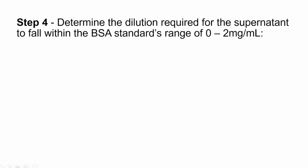Then you will need to determine the dilution required for the supernatant to fall within the BSA standards range of 0 to 2 mg per milliliter. The dilutions should be determined based on the assumed protein concentration in the supernatant that was shown in the previous step.